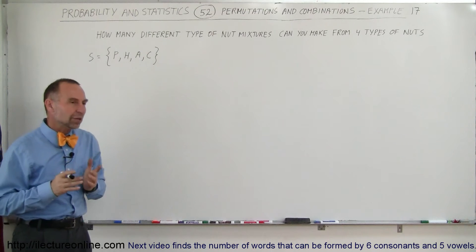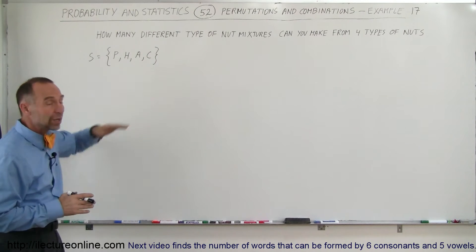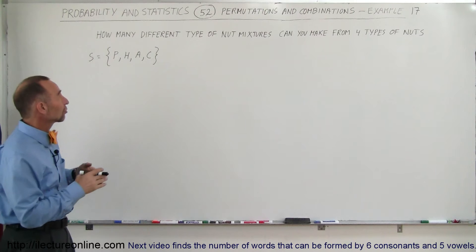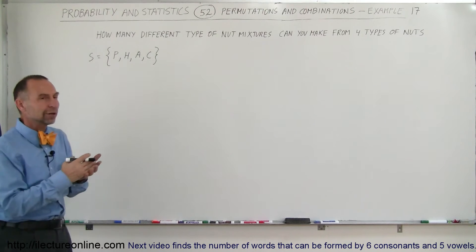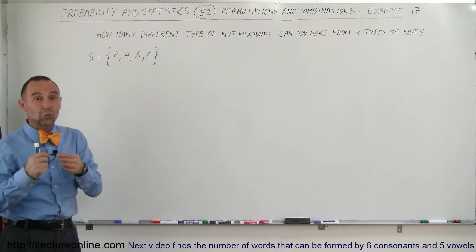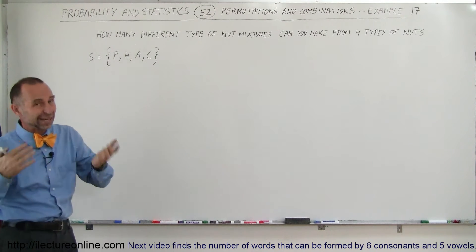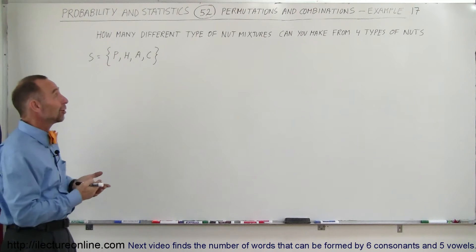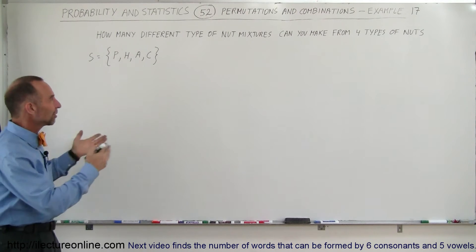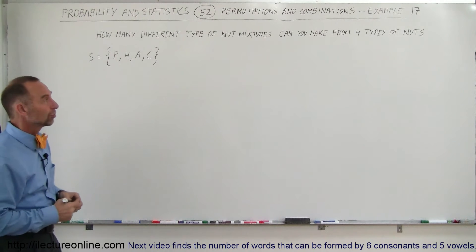We can make a mixture with all four, a mixture of three of the four, a mixture of two of the four, and of course a mixture of just one nut. Even though one nut might not technically be a mixture, let's assume that's another valid choice.